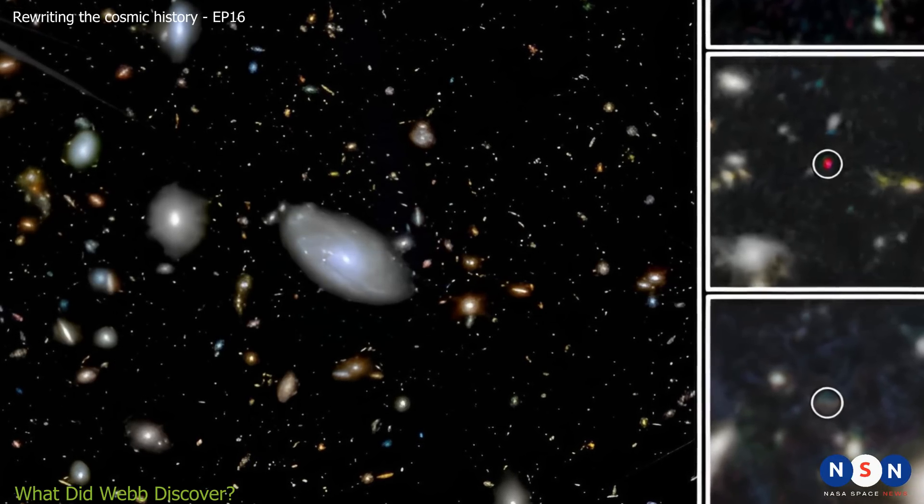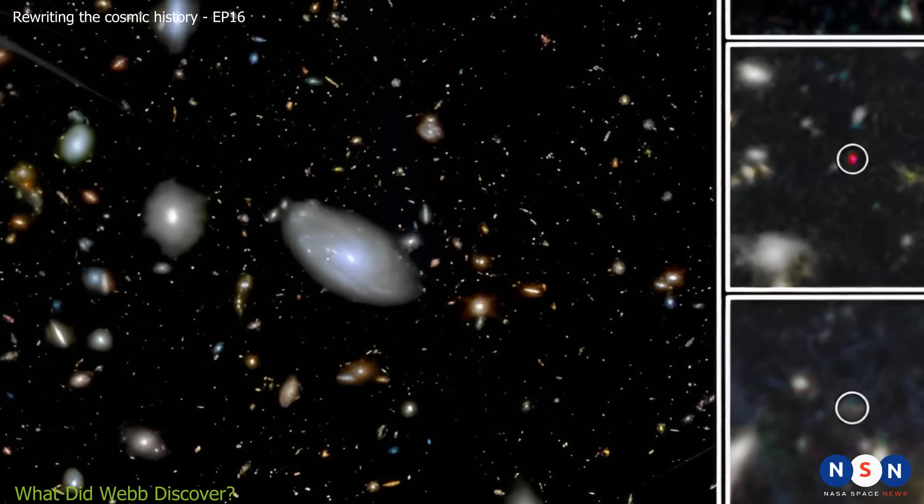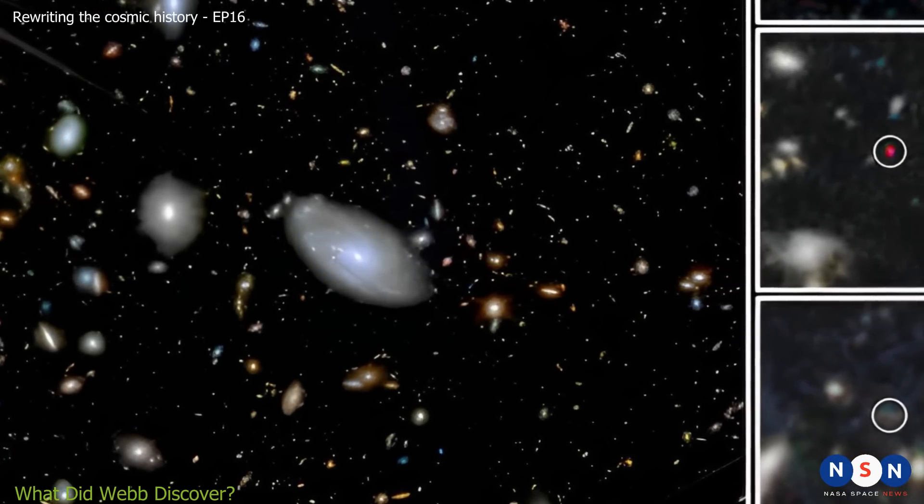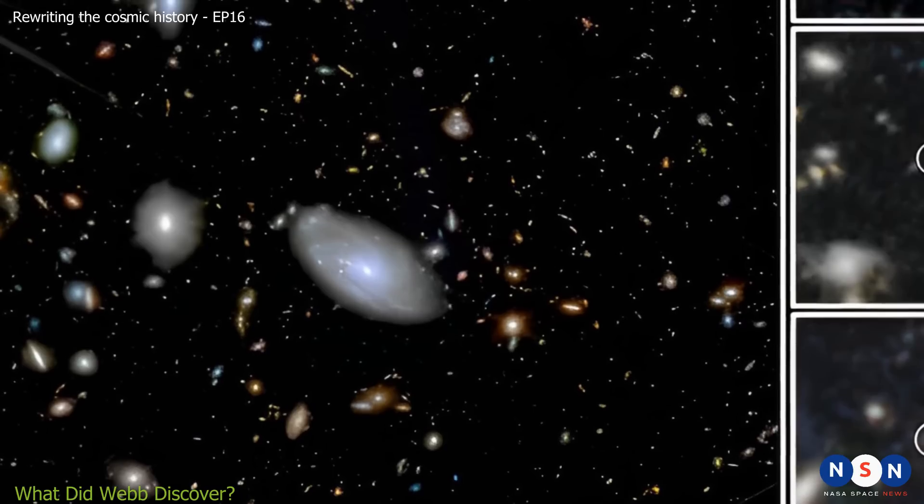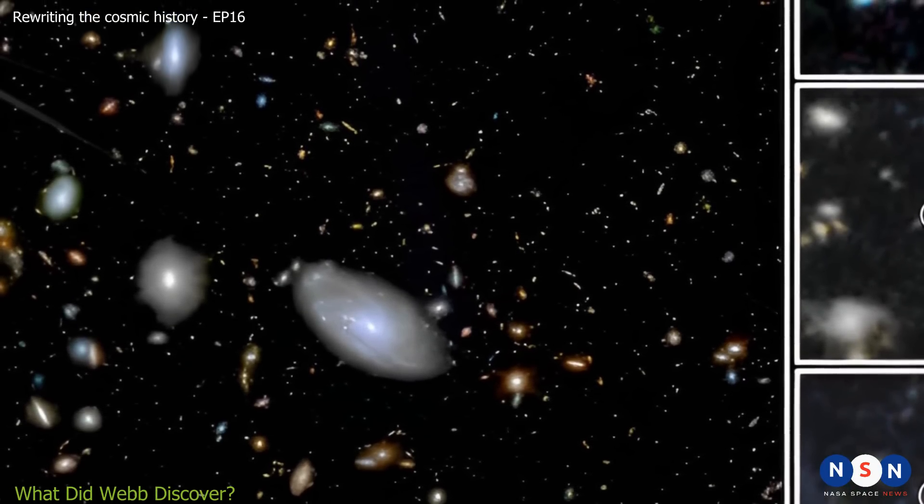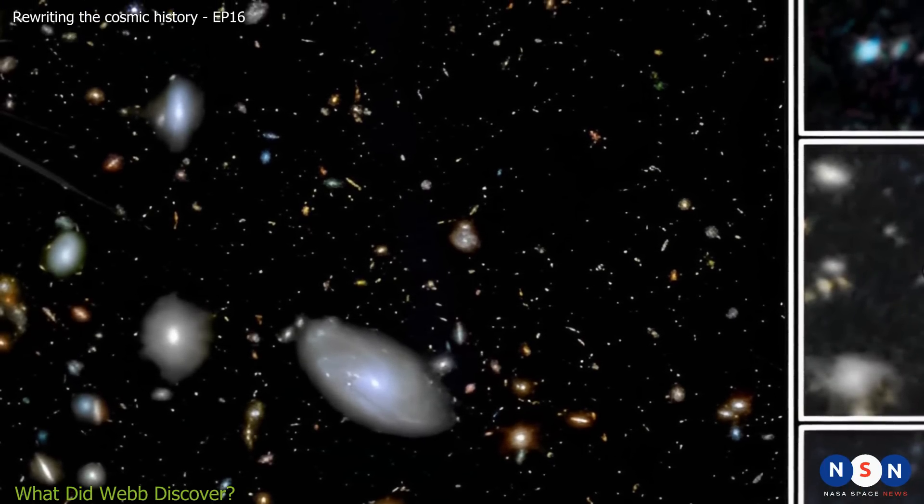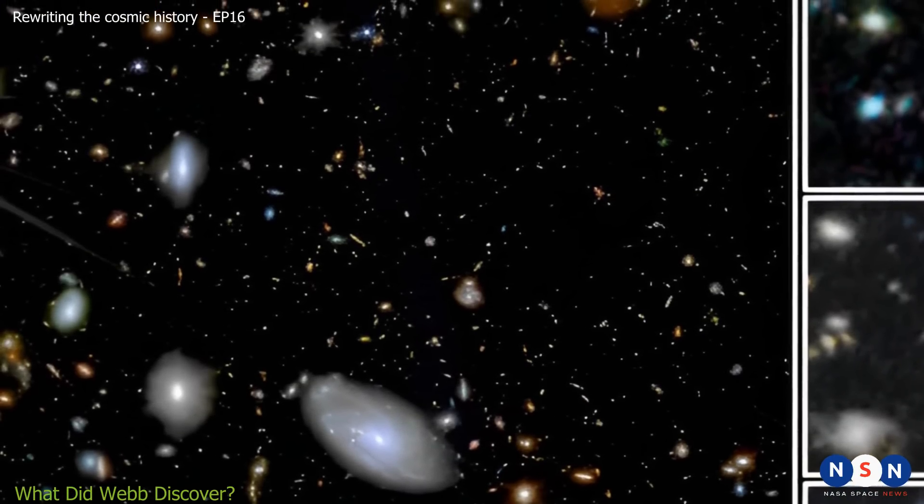To show you what these galaxies look like, we have prepared some images based on the data from Webb. These images are not photographs, but reconstructions using computer models and color codes. The colors indicate the wavelength of the light that each galaxy emits, from blue to red, corresponding to shorter to longer wavelengths.